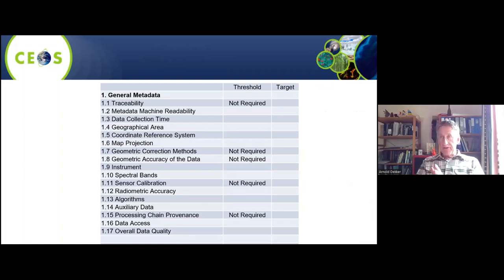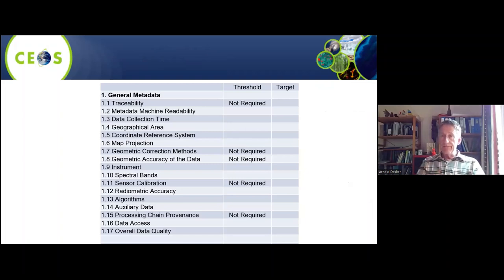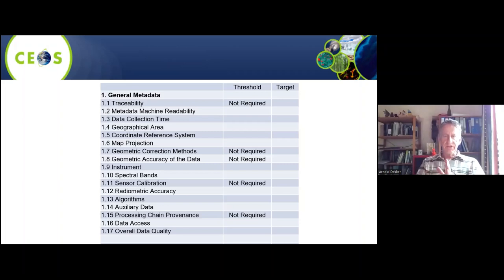I'm not going to go through all the metadata fields, but I'll give you an idea of what's involved. This is the general metadata, which is similar for most Earth observation types — also for terrestrial, agricultural, and geological applications. There are all the metadata you require, including some actions, with threshold and target columns: threshold is the minimum, target is optimum. We've been trying to keep the general metadata as similar as possible for the aquatic as for the terrestrial and other applications.